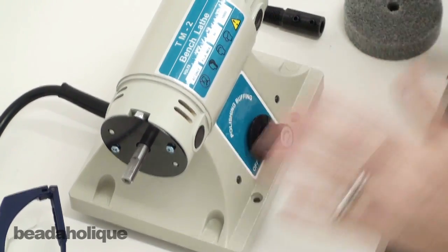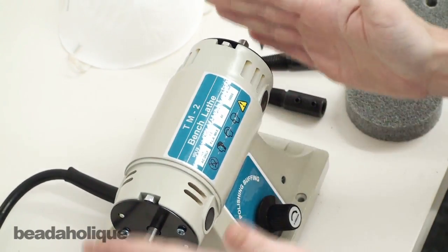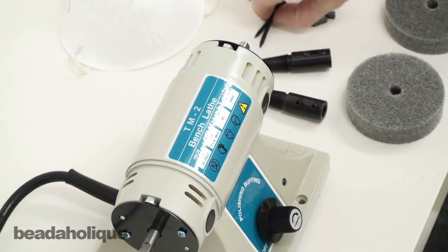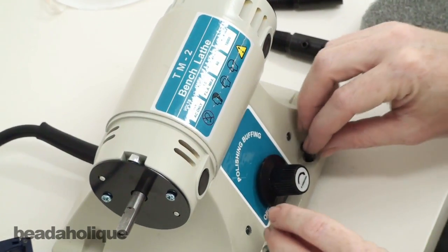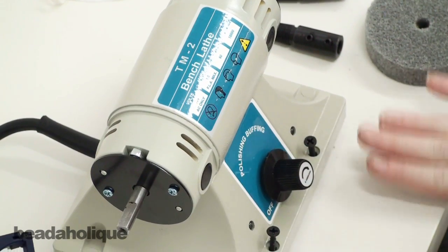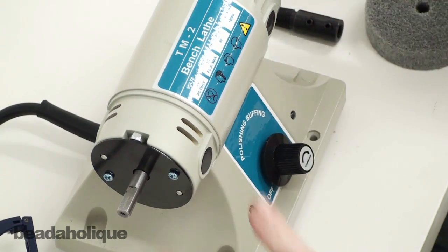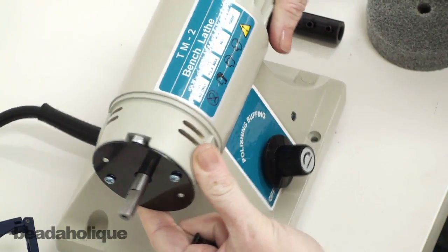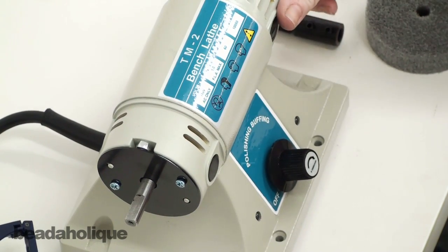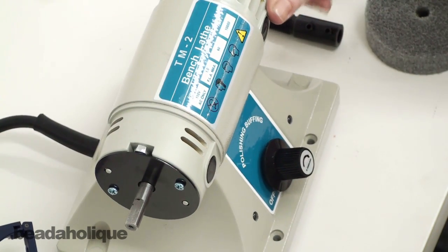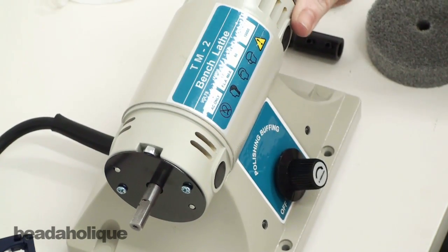When you get this kit, it's going to arrive like this. This is the base form of it. You're going to be given two screws which go right here, and you're going to want to screw it down to your work surface to prevent it from starting to jump around or move around as you're applying pressure and doing your buffing.